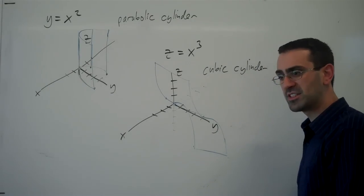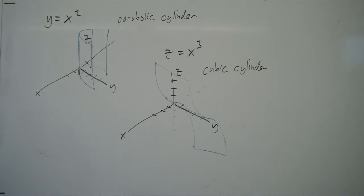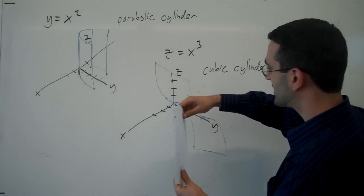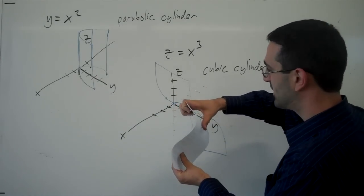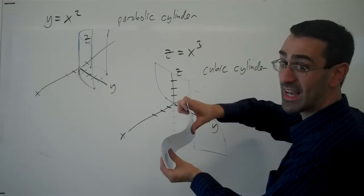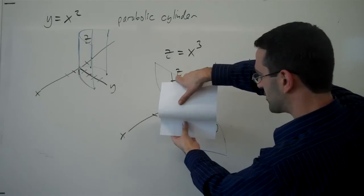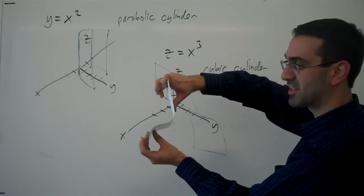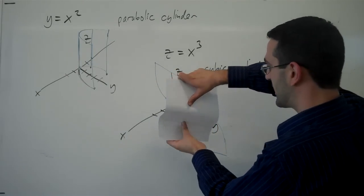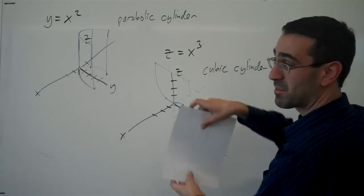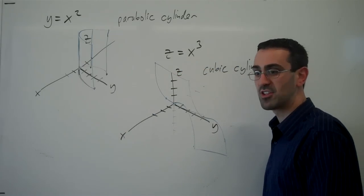And you can sort of imagine what this shape would look like by thinking about a piece of paper. Where if we turn it sideways, we're bending it into sort of that cubic s shape. But it's extending for all values of y. So we're really imagining that cubic shape extending for all values of y. We're imagining this sort of bent piece of paper type of shape. That's our cubic cylinder.